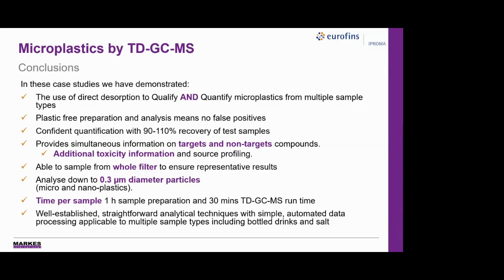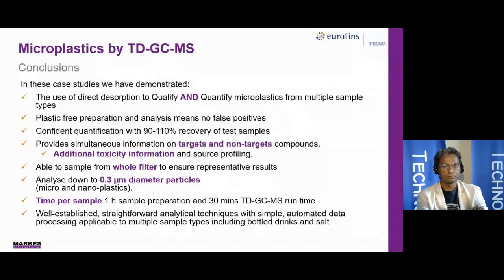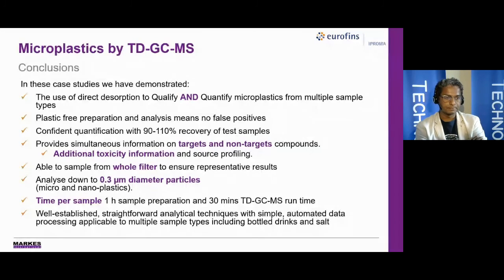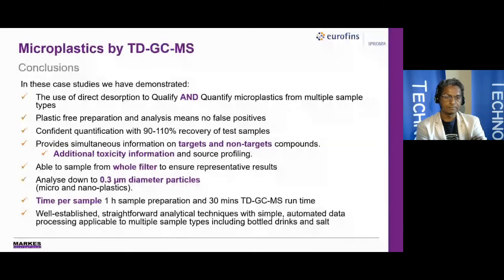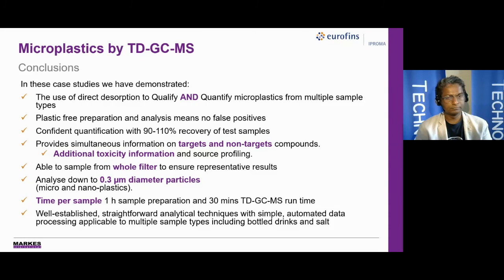To summarise these case studies: confident identification of microplastics using evolved VOC markers by TD-GCMS; quantitative correlation between the mass of polymer and the peak area response of the marker compound, so TD-GCMS can provide a mass balance concentration — for example in micrograms per litre. The whole process is free from plastic contamination, eliminating the risk of false positives. We have great recovery results for the entire process from multiple sample types. The lower temperature desorption gives sufficient information to identify and quantify the plastic, and simultaneously provides the opportunity to determine additional information such as additives and contaminants to aid source profiling and toxicity evaluation. The workflow is straightforward and fast, taking as little as one hour per sample for preparation and 30 minutes for analysis. Simply transferring the entire filter to the TD tube not only increases sensitivity but eliminates concerns over inhomogeneity of the filtrate and saves time while reducing the risk of error with manual handling.